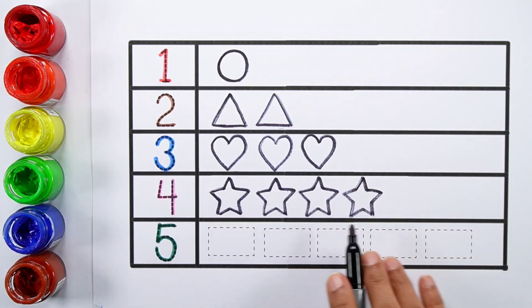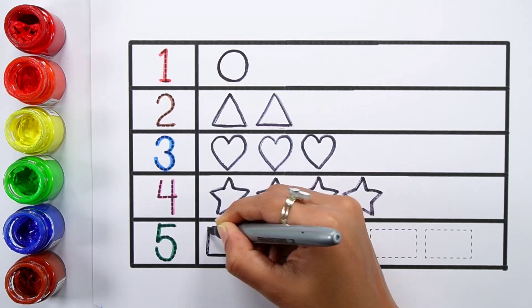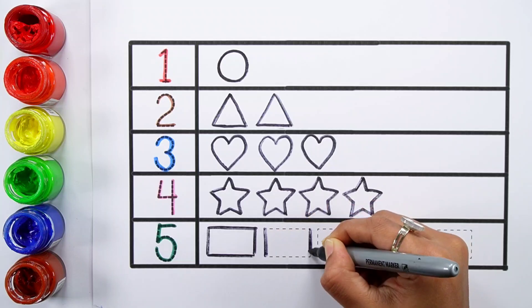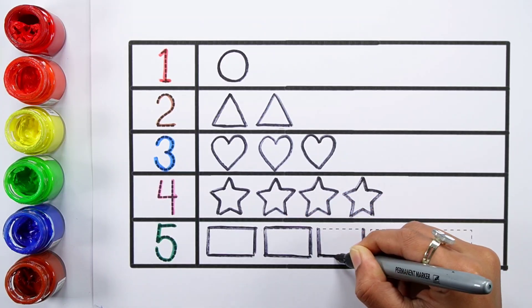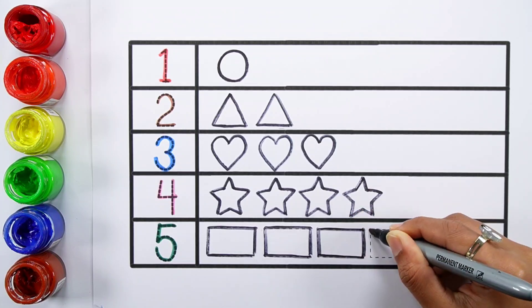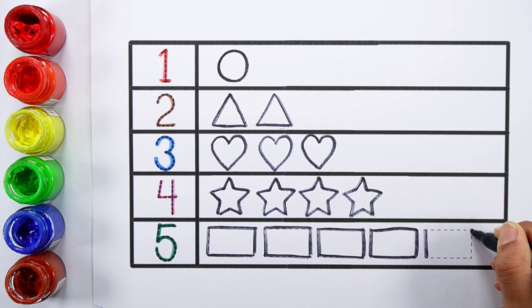One, two, three, four, four stars. One, two, three, four, five, five rectangles.